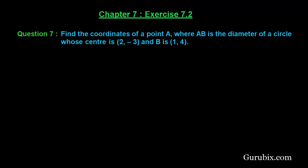Welcome friends, let us solve question number 7 of exercise 7.2 of chapter 7. The question says find the coordinates of a point A where AB is the diameter of a circle whose center is (2, -3) and B is (1, 4).